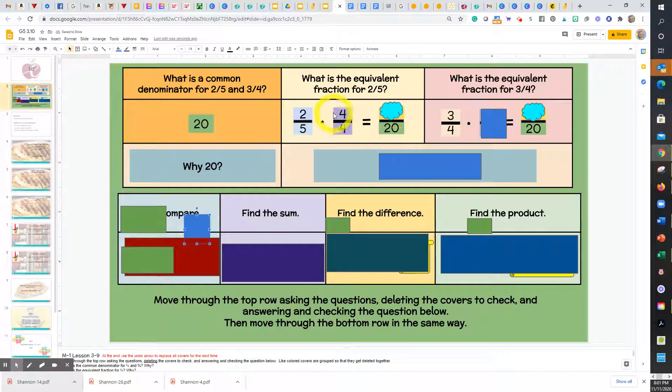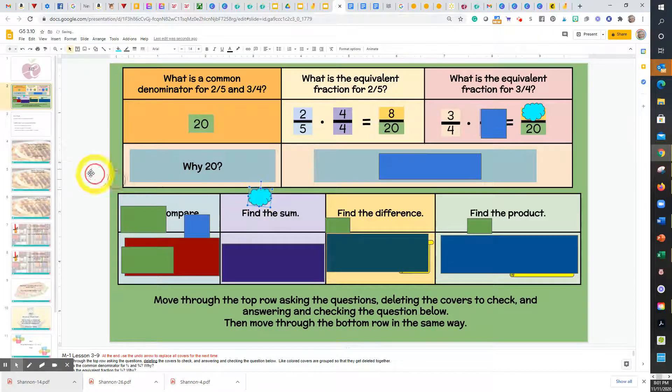If I multiply by four-fourths, which is the same as one whole, what will be my equivalent fraction? Class, eight-twentieths.